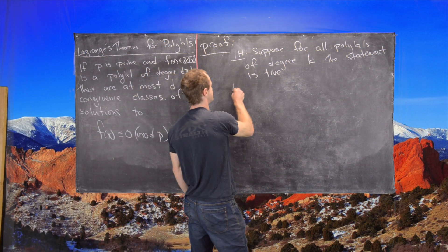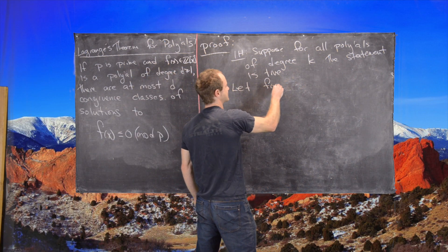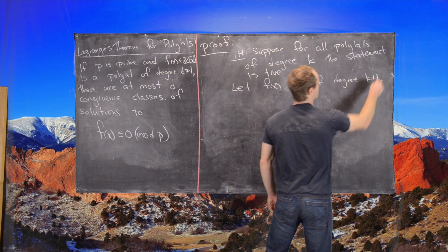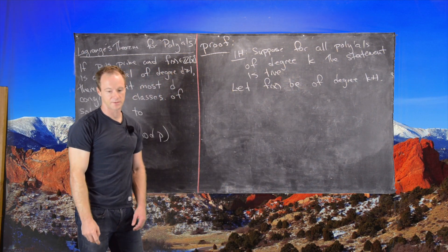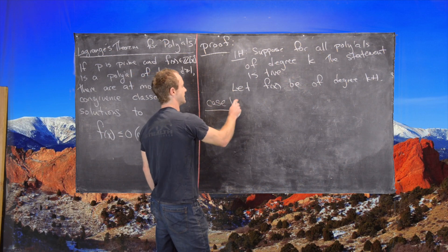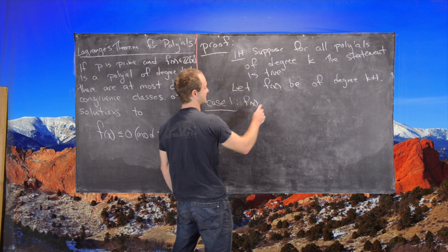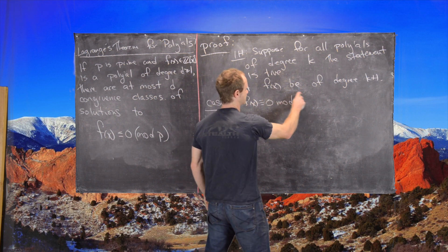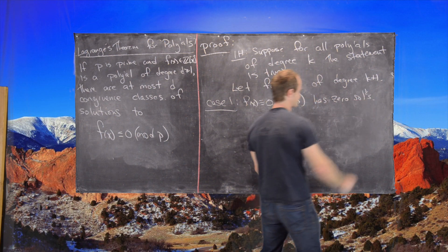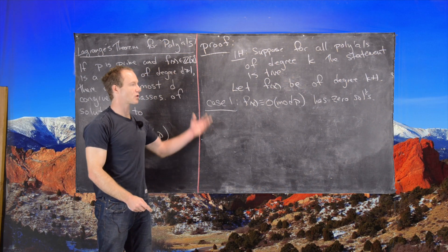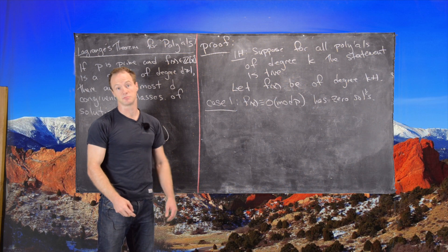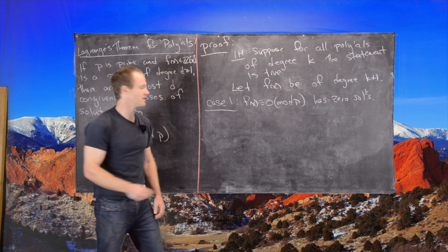Let F of X be of degree K plus 1. Now we have two cases. Case number one: F of X congruent to 0 mod P has 0 solutions. If it has 0 solutions, then we're already done because 0 is most definitely less than K plus 1, and that is allowed by this theorem.